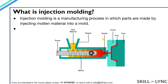The first topic we shall cover is what exactly is injection molding. Injection molding is a manufacturing process in which parts are made by injecting molten material into a mold. The hot molten material which is injected takes the shape of the mold and then solidifies as it is cooled. Then the mold is opened and we get the required part.